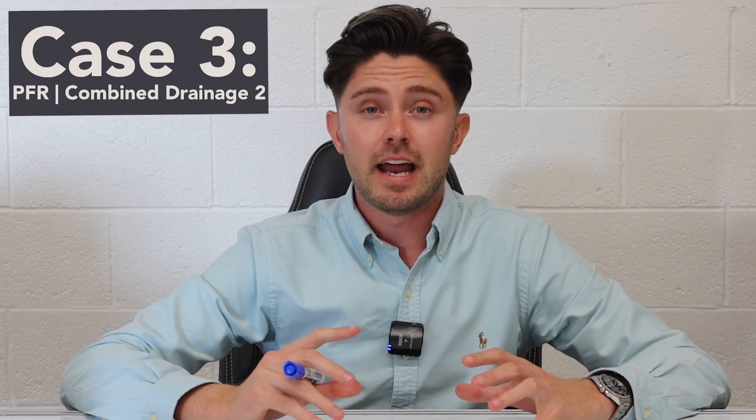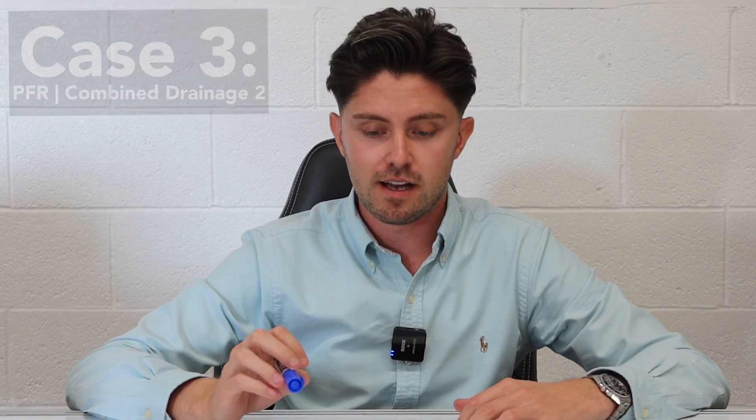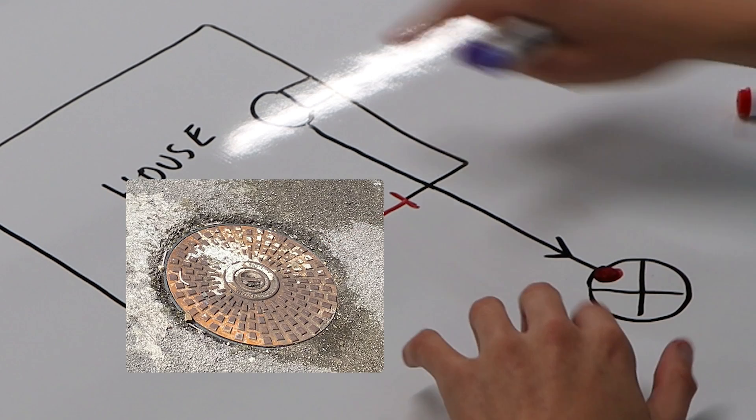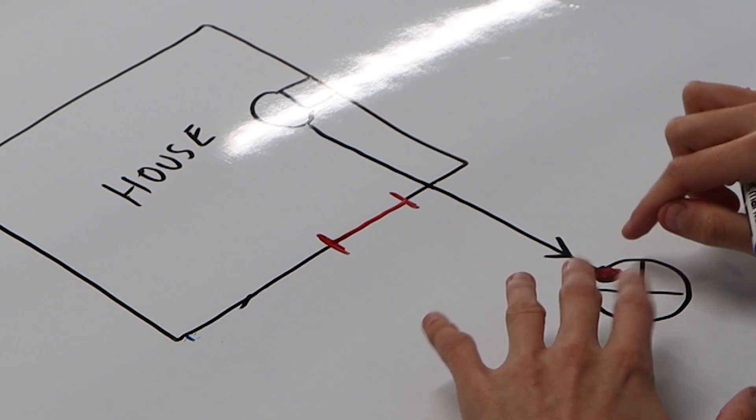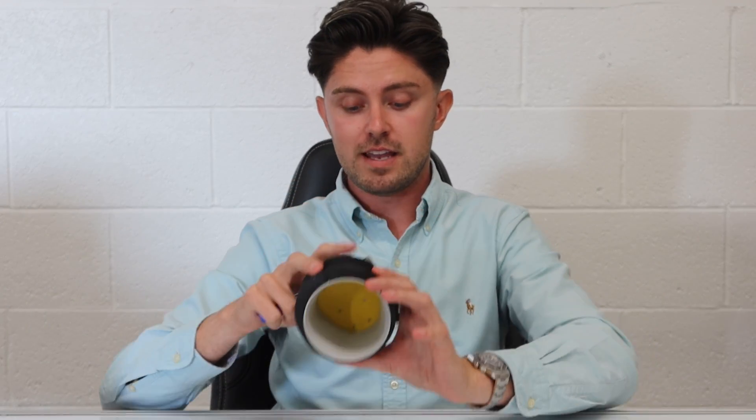Why it's so important to water test or have a CCTV drainage survey and have a surveyor that really understands the site is if you're looking at this manhole and you simply flush the loo and see water come out of that connection, you might think it's fine just to fit your non-return valve in that connection.